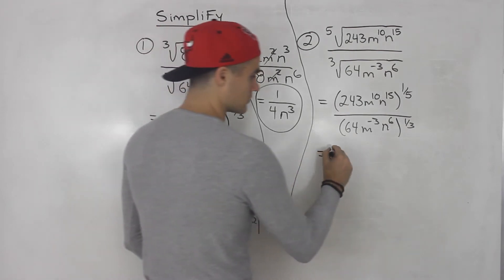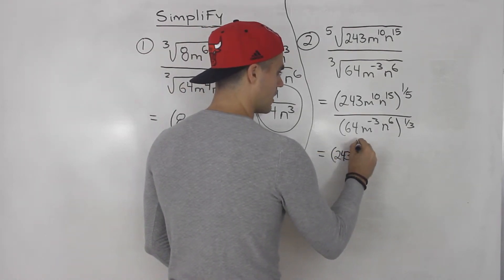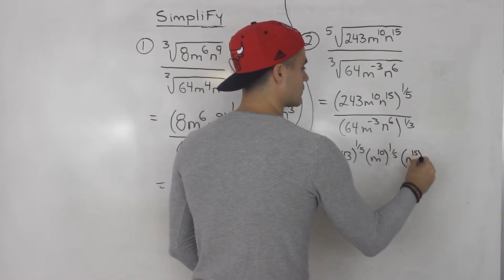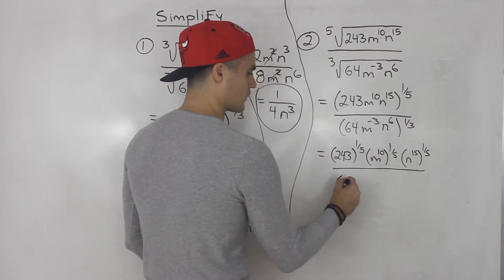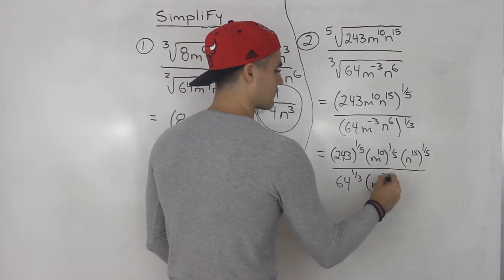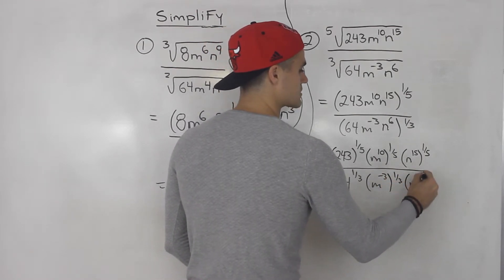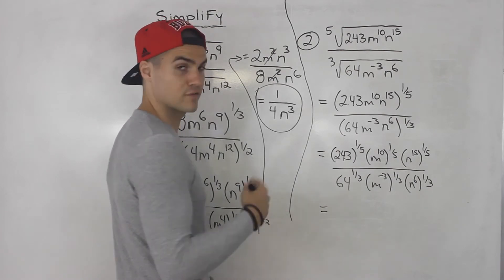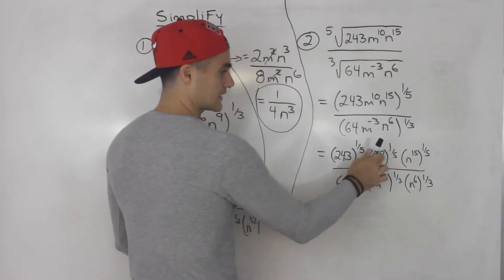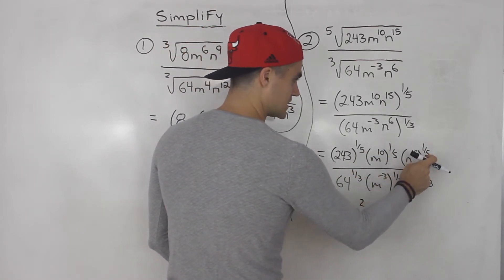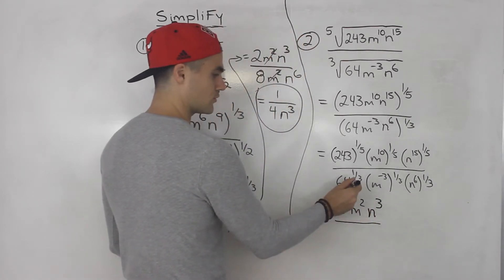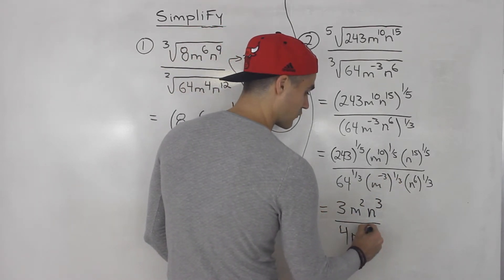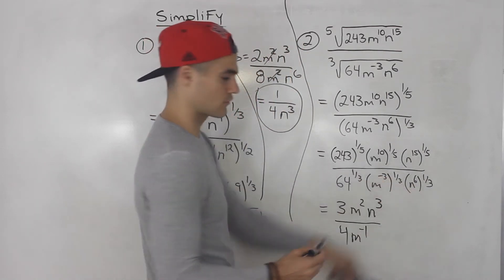Then, same as before, distribute that exponent. So 243 goes to the power of 1 over 5, m to the 10 goes to the power of 1 over 5, and n to the 15 goes to the power of 1 over 5. All over 64 to the power of 1 over 3, m to the negative 3 to the power of 1 over 3, and n to the 6 to the power of 1 over 3. So the fifth root of 243 is 3; 10 times 1 over 5 gives us 2; 15 times 1 over 5 gives us 3. The third root of 64 is 4; negative 3 times 1 over 3 gives us m to the negative 1; and 6 times 1 over 3 gives us 2.